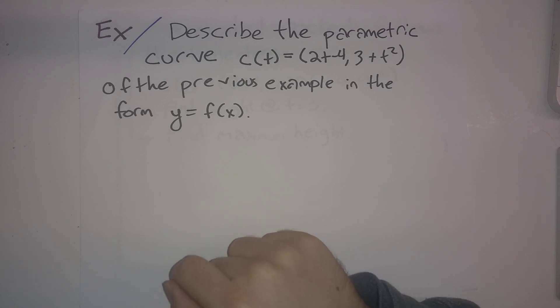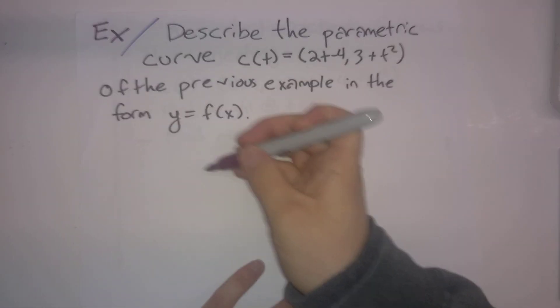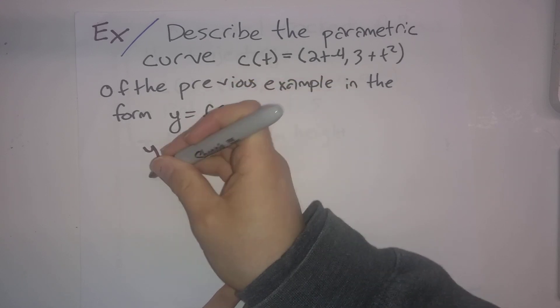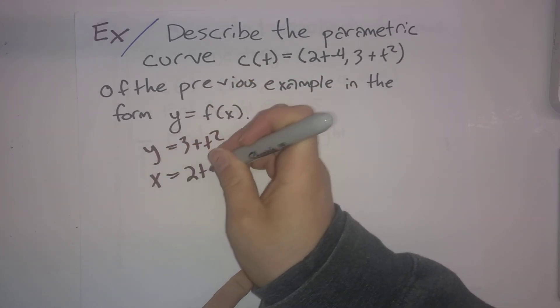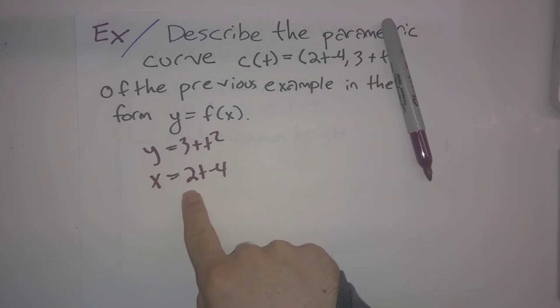As it turns out, we can actually rewrite it in the form y = f(x). So how are we going to do that? We want to write y as a function of x, but right now we have y = 3+t², x = 2t-4. We want to write y as a function of x. How do we accomplish that?